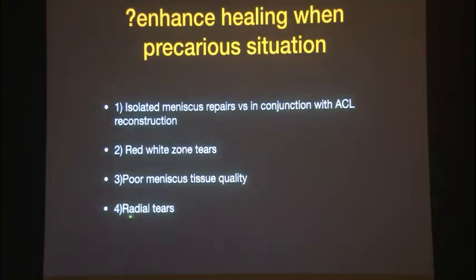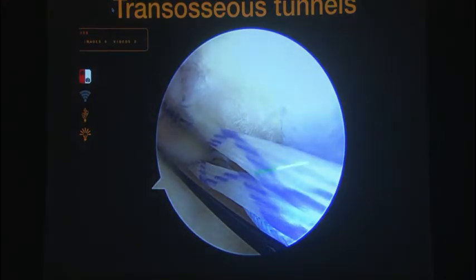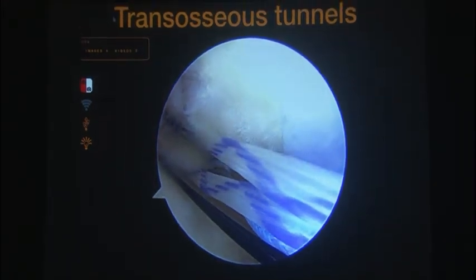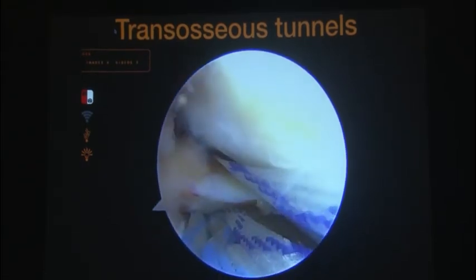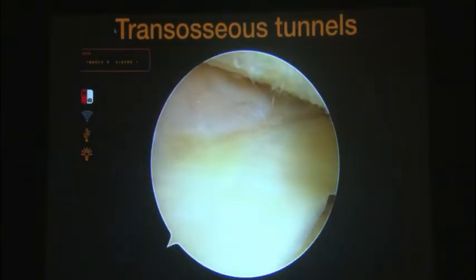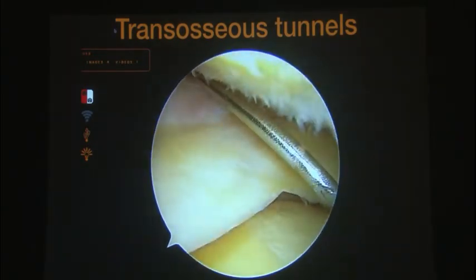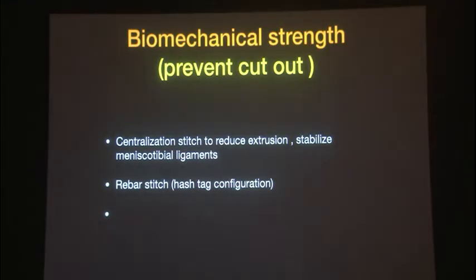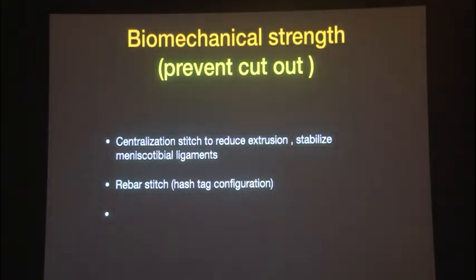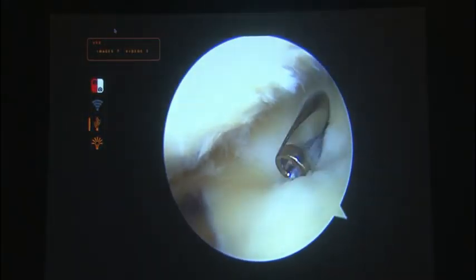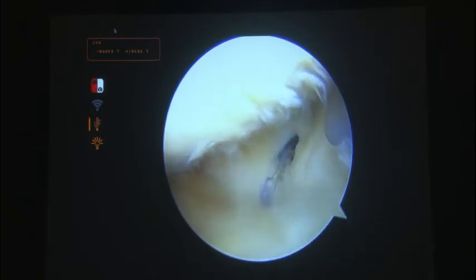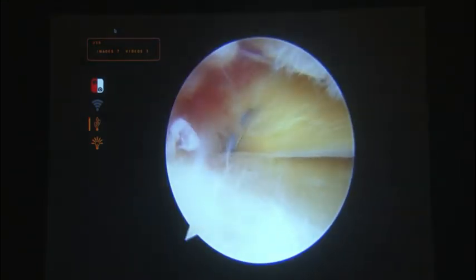For cases with radial tears, poor meniscus tissue, or red-white zone tears — such as poor or early degenerative root tears — create trans-osseous tunnels. I prefer trans-osseous tunnels over anchor technique because the tunnel itself provides vascularity for the root to heal at the surface. You also create a centralization stitch, as Bhupesh showed, because it creates a strong and stable environment for the meniscus to heal.